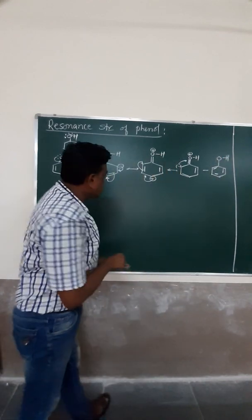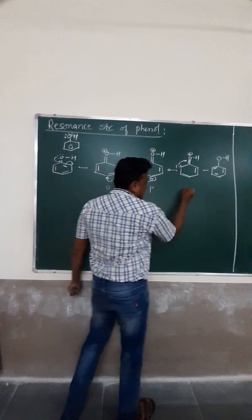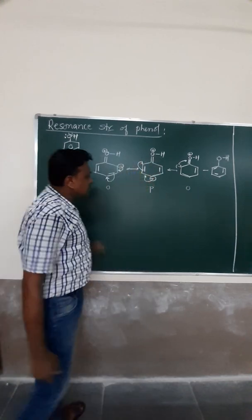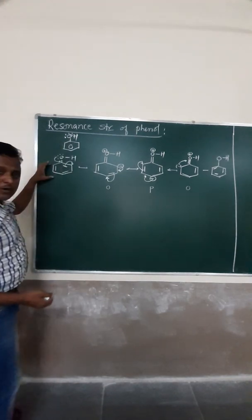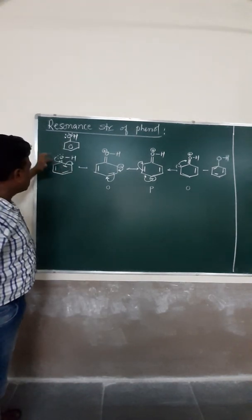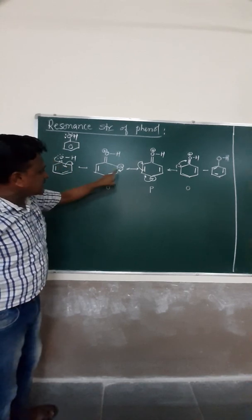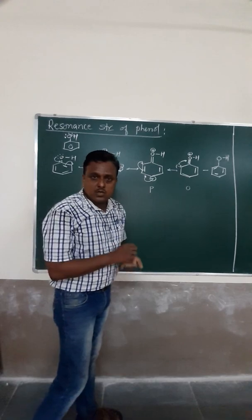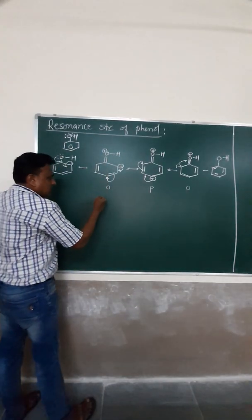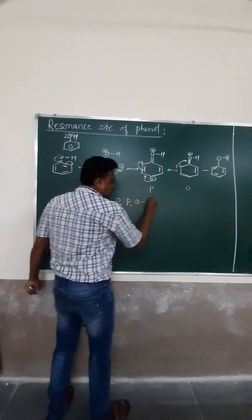This gives us the resonance structure of phenol. In this resonance, stabilization occurs at the ortho position and the para position. Friends, phenol is an electron-rich center — it can donate electrons. The resonance stability takes place at the ortho and para positions, which is why phenol is always ortho-para-ortho directing.